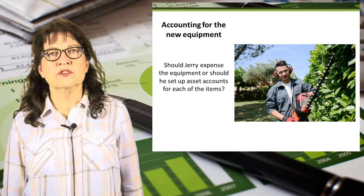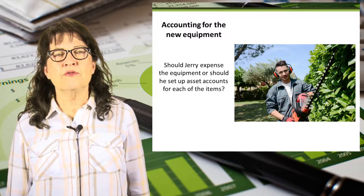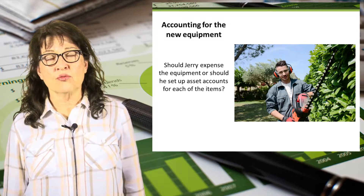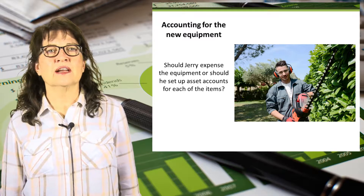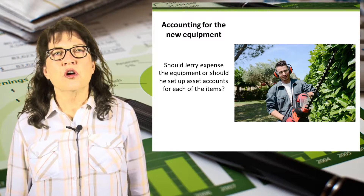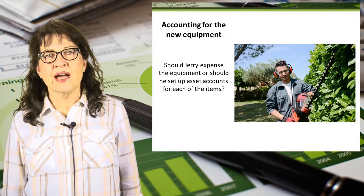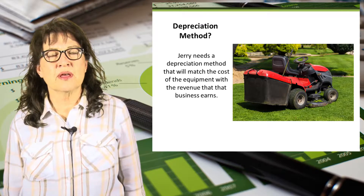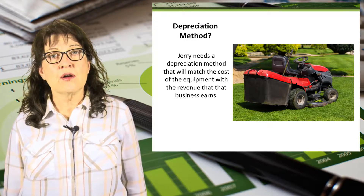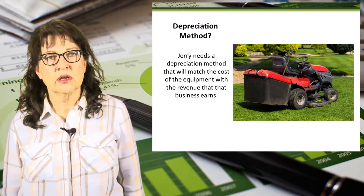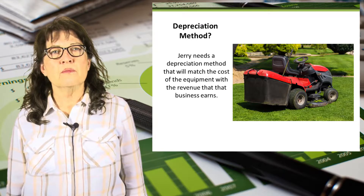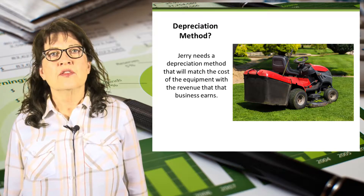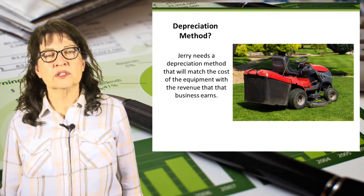How is he going to account for this new equipment? Jerry's trying to figure out how to record the purchase of these items on his books. Should he expense it all right now, or should he set up asset accounts for each of the items? Jerry's also considering how long each item will last before he needs to purchase new equipment. Jerry knows that his accountant will ask him about depreciation, and she's told him that there are several methods he should consider. Jerry knows he wants a depreciation method that will match the cost of the equipment with the revenue that the business earns.